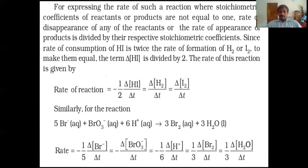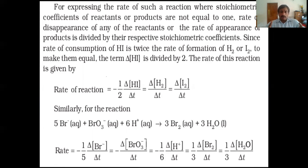Now, what if different numbers of moles of reactants and products are present? In the previous case we took R gives product — one mole reactant gives one mole product. But suppose two moles of reactants are present: 2R gives P. In such a reaction, the number of moles of reactant is not equal to the number of moles of product. Then the rate calculated as delta[R]/delta t will differ from delta[P]/delta t, because the stoichiometric coefficients in the balanced chemical equation are not the same.